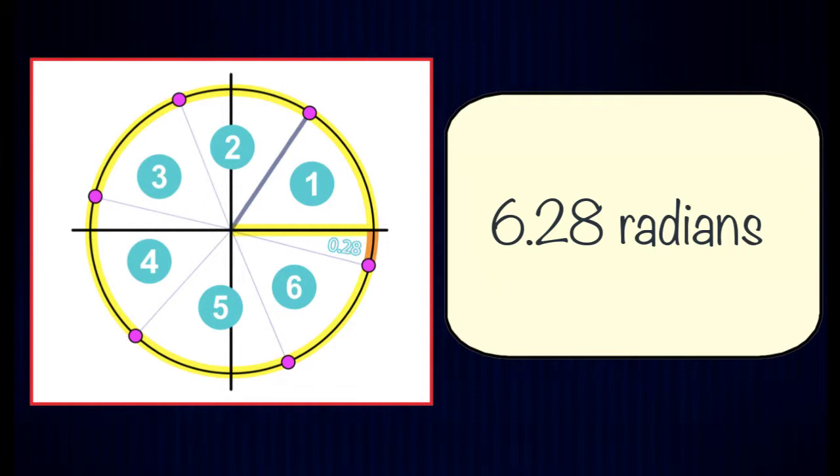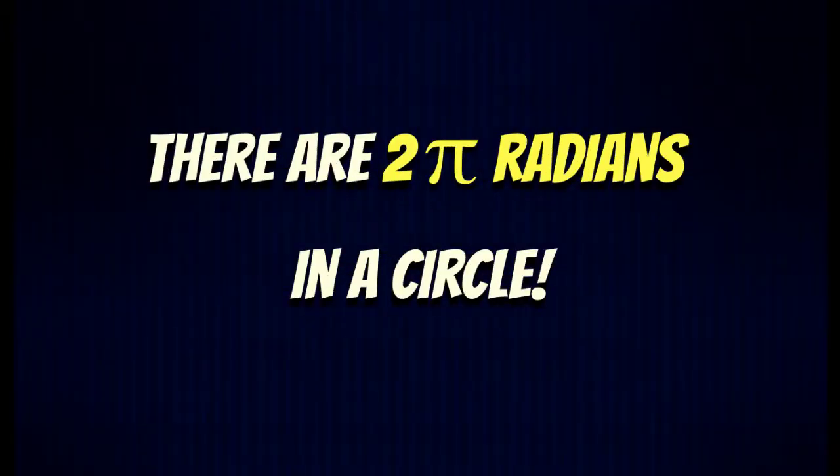In an earlier video we discovered that 6.28 radians fit inside a circle and also discussed how mathematicians have discovered that it's actually two pi radians that fit inside a complete revolution of a circle.